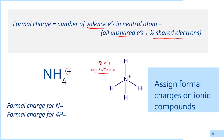The formal charge for nitrogen is equal to five valence electrons minus zero unshared electrons. We can see there are zero unshared electrons surrounding the nitrogen. As for the shared electrons, each bond represents two electrons, so let's count the shared electrons.